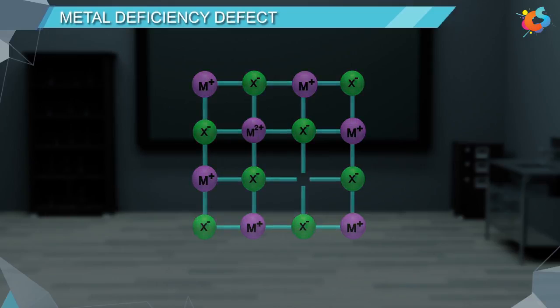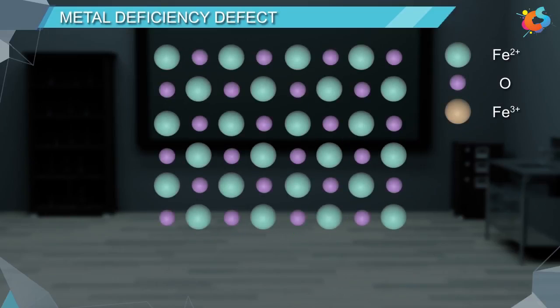Example: FeO is mainly found having a composition of Fe₀.₉₅O. In crystal of FeO, if some of the Fe²⁺ ions go missing, then the loss is compensated by the addition of Fe³⁺ ions. In this way, though the overall charge is balanced, some spaces will be left vacant in the crystal.